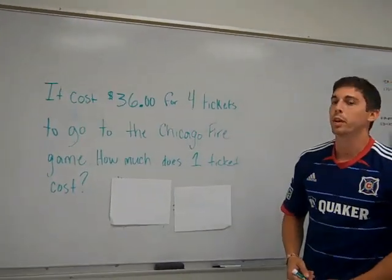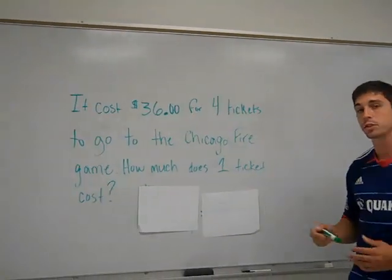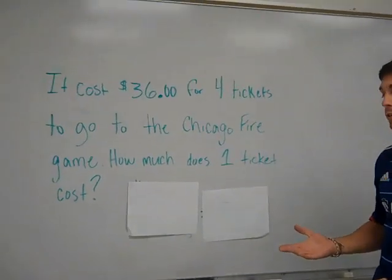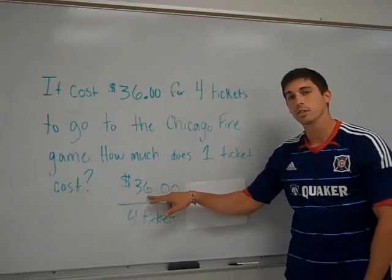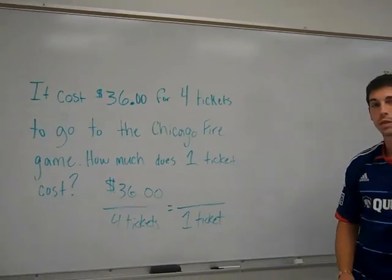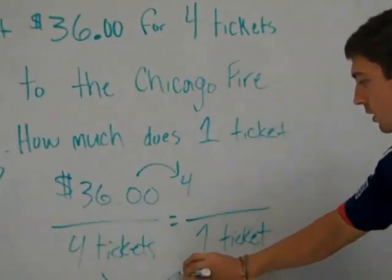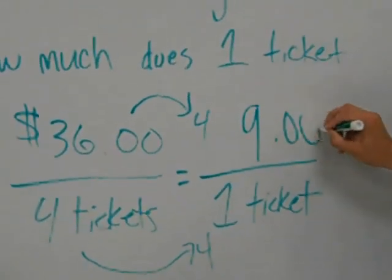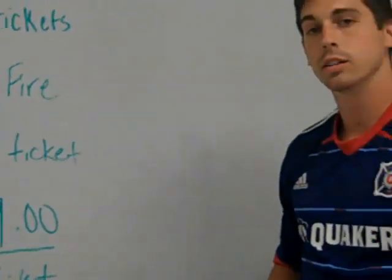Welcome to example three about unit rate. The question is: it costs $36 for four tickets to go to the Chicago Fire game — how much does one ticket cost? First, set up the ratio: $36 over four tickets. From there, find the equivalent ratio by dividing both sides by four. 36 divided by four is $9, and four divided by four is one ticket. So your answer is $9 for one ticket.